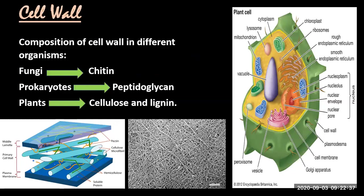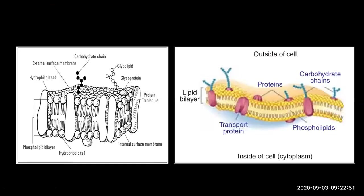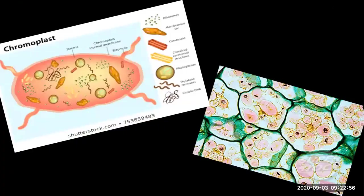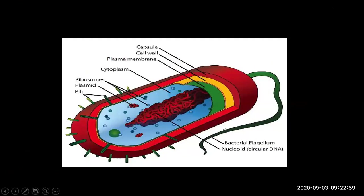In kingdom Protista, you can consider amoeba, paramecium, euglena, algae — and all these kingdoms are made up of eukaryotic cells. While kingdom Monera, which is of bacteria, is made up of prokaryotic cells. There is only one kingdom — kingdom Monera — which is made up of prokaryotic cells, and it includes all kinds of bacteria and cyanobacteria.